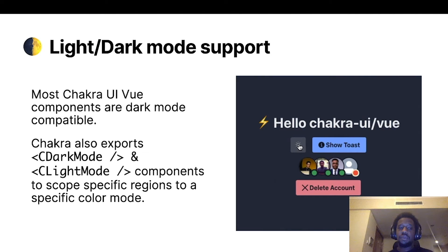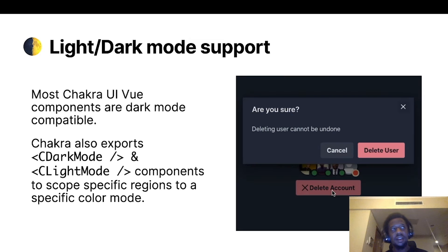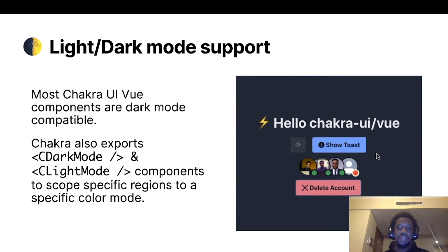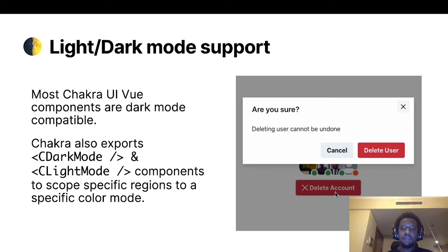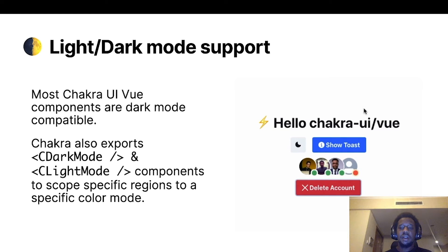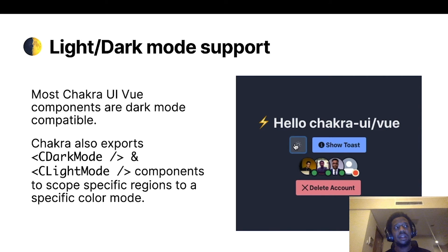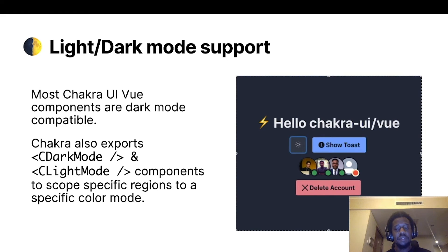Chakra UI Vue also ships most components with support for dark and light mode. As you can see in this example, when the user toggles between dark and light mode, the button colors change automatically — without having to write any custom styles for the buttons. Even the alert component responds correctly, and when the user clicks the dialog, the dialog also responds the correct way.